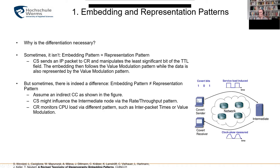For example, the covert sender influences the service load on an intermediate node using a modulation of traffic rates — that would be the rate-throughput pattern applied — but it can be recognized by the covert receiver in different ways, so the receiver can apply different patterns to read the hidden information.